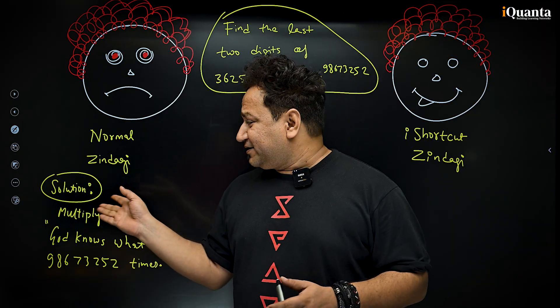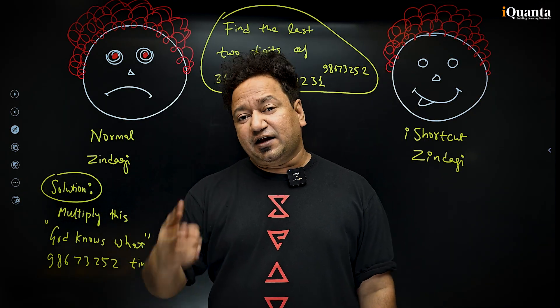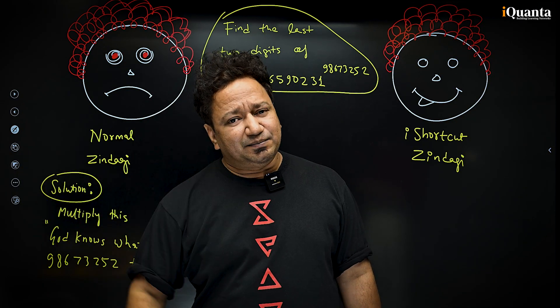And this is normal, Zindagi. The solution will be multiply this, God knows what number, this many times. And then find the last two digits. This will take the natural course of your lifetimes.